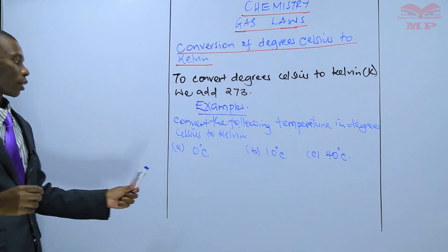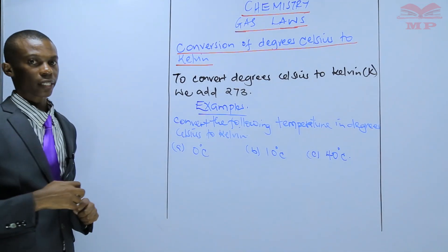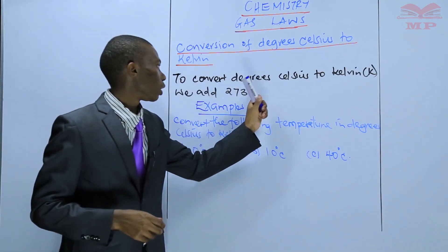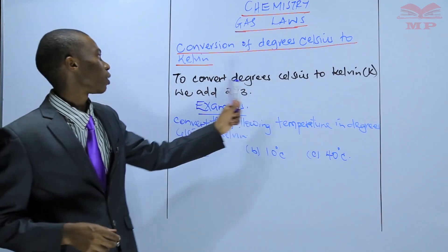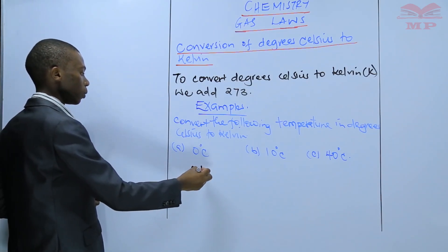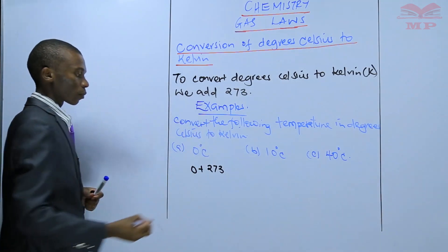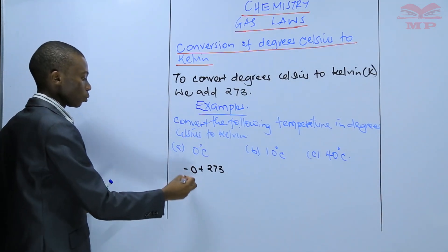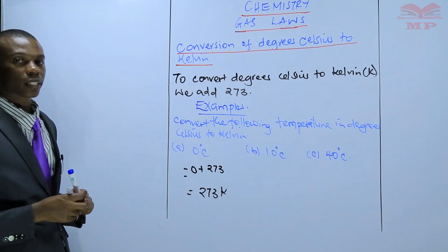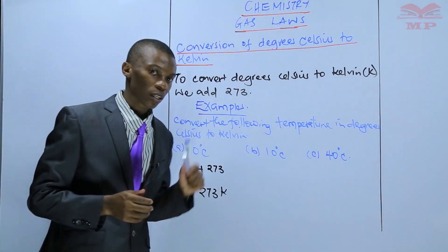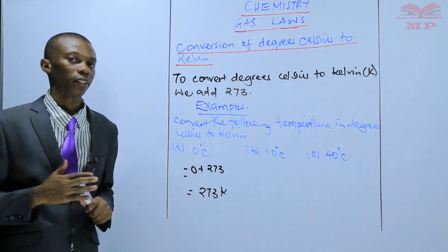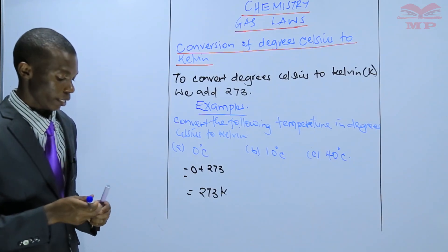Start with the first one. You have been given 0 degree Celsius. To convert this 0 degree Celsius, we add 273. So 0 plus 273 equals 273 Kelvin. This means that 0 degree Celsius is equivalent to 273 Kelvin.